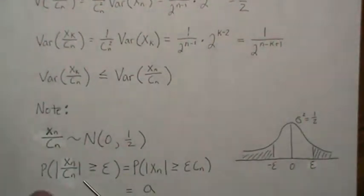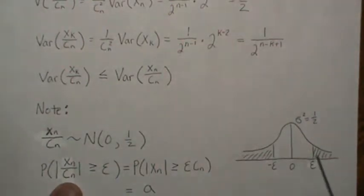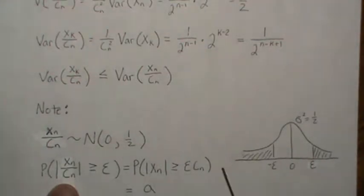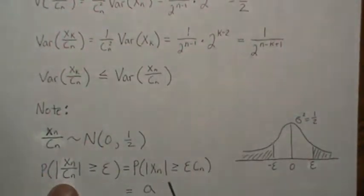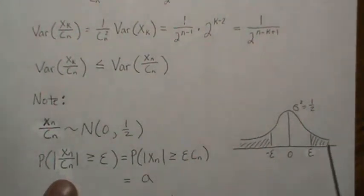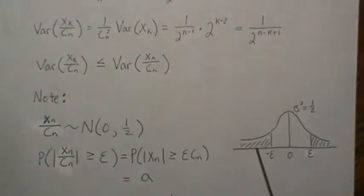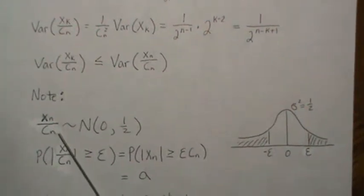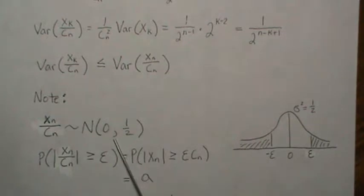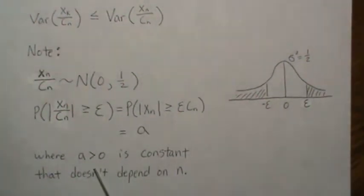If we look at the probability that |Xn/Cn| > ε — pictured as a Normal(0, 1/2) distribution with tails beyond ±ε — multiplying Cn to both sides gives us a fixed area. The big note is that for any n, whether it's the 100th or 1000th term, it's still a Normal(0, 1/2) random variable. So this probability is some constant 'a' — it's positive and does not depend on n.